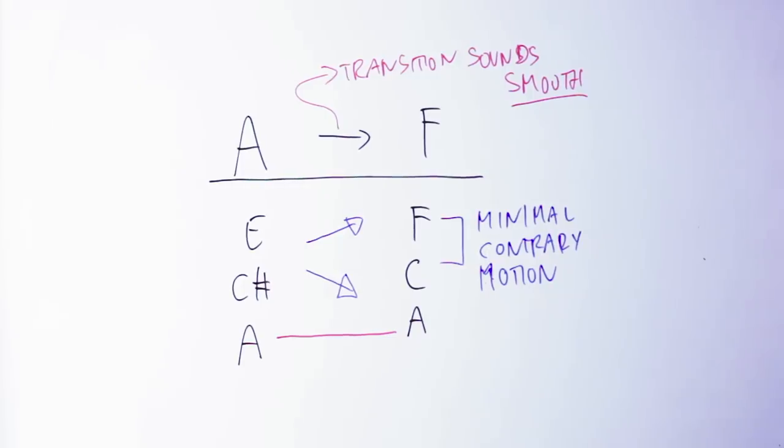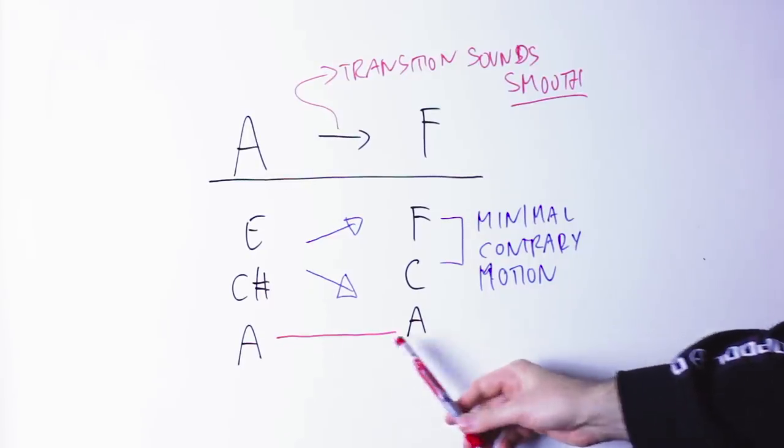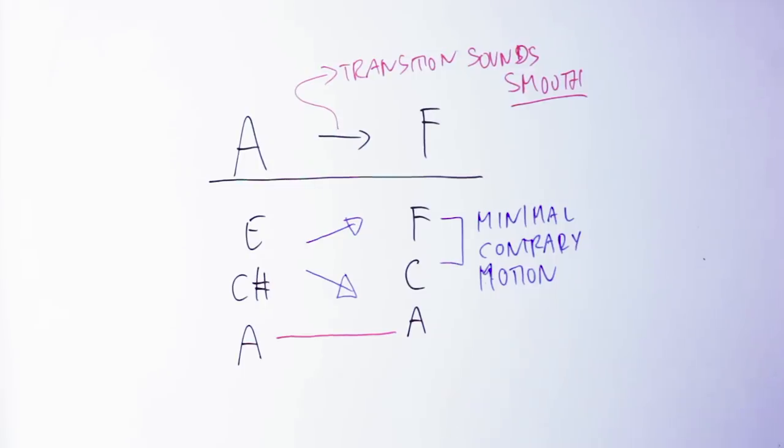So even if those two chords are not in the same key, all their notes are close by and they are related in this way. So the transition sounds smooth because the notes in the chord move just a little bit. Indeed, if I'm playing A, C sharp, E on the guitar, and then I'm playing A, C, F, you can hear those two chords feel connected.